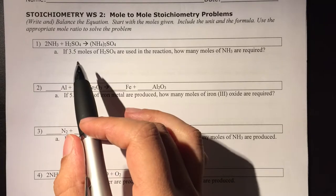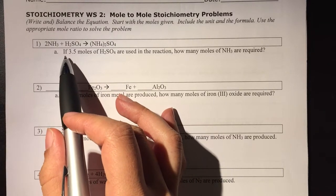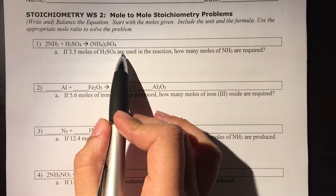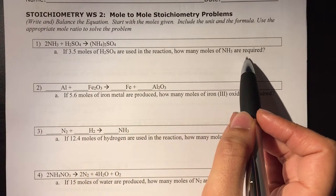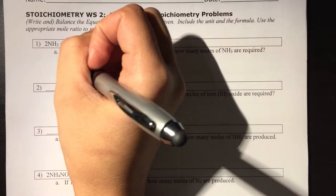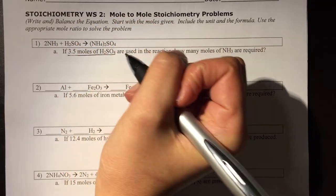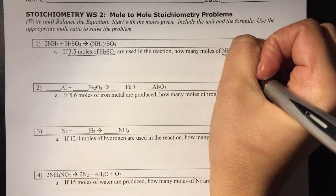So if we look at our problem, we're going to start with figuring out what we're given. So if 3.5 moles of H2SO4 are used in the reaction, how many moles of NH3 are required? So I always want to know where am I starting from, and then where is it that I'm trying to get to?